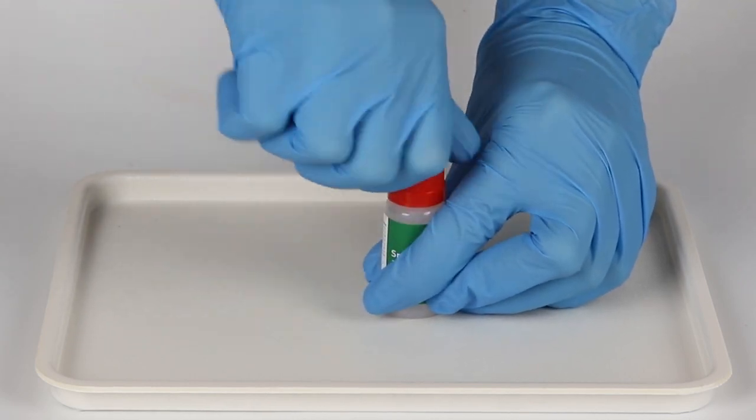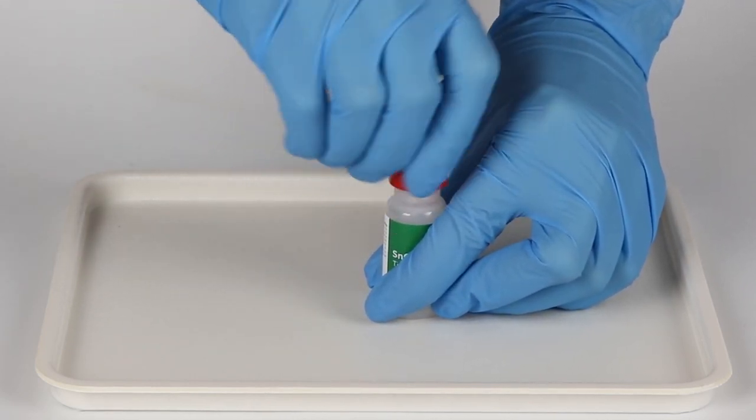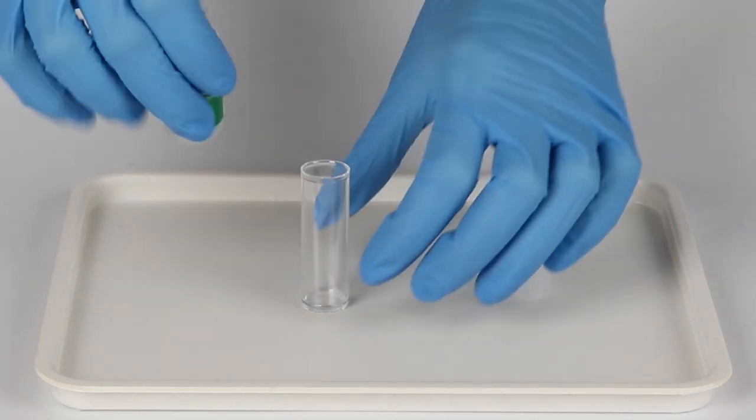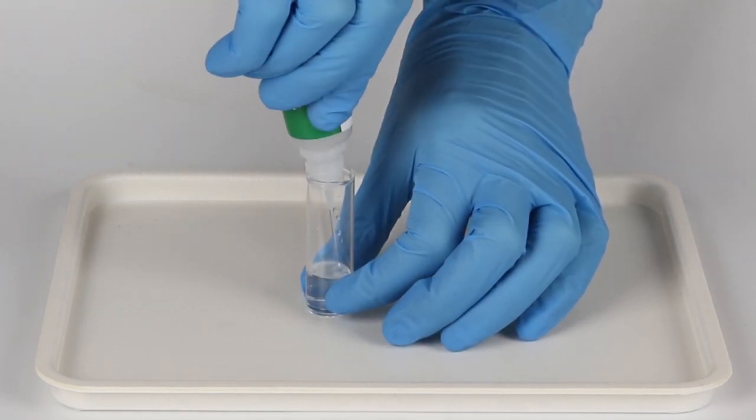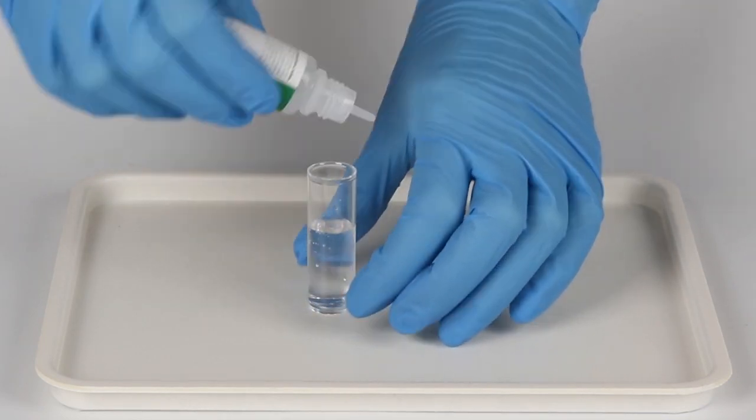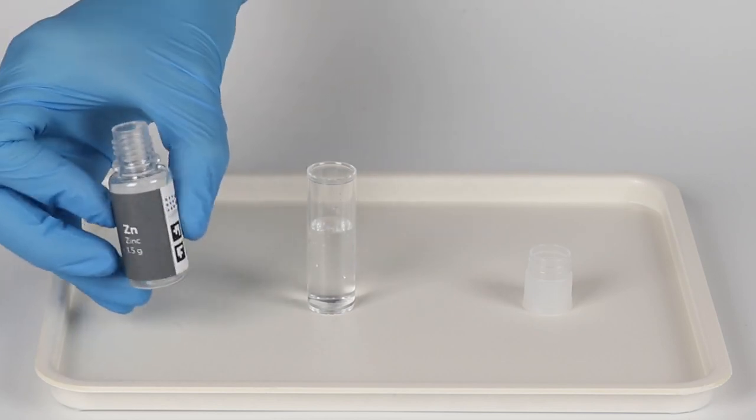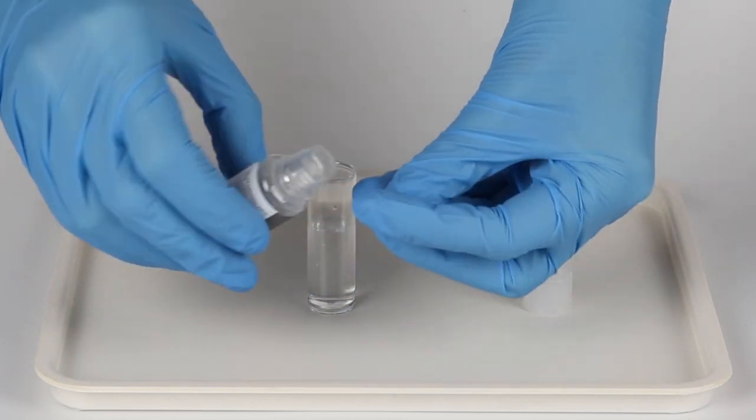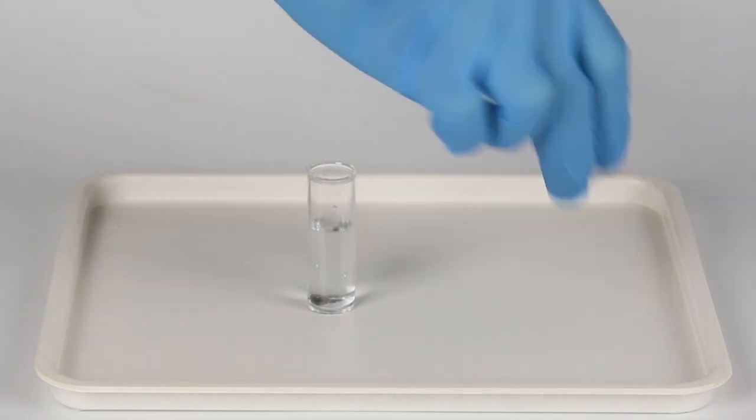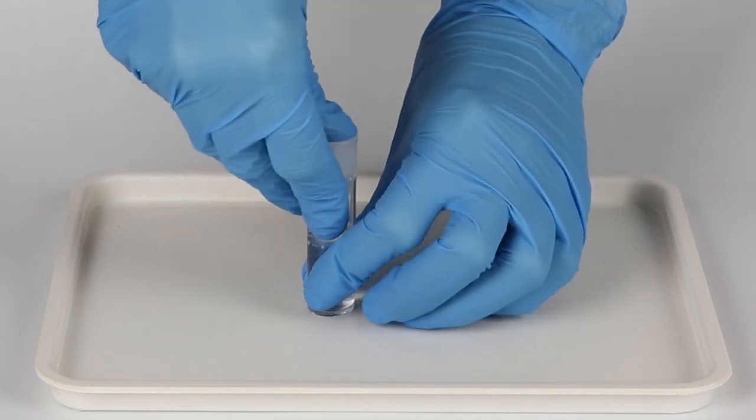Now, open the bottle again and fill the vial approximately to its halfway point with the obtained solution. Take a zinc pellet and drop it into the vial. Seal the vial. The hedgehog will grow right before your very eyes.